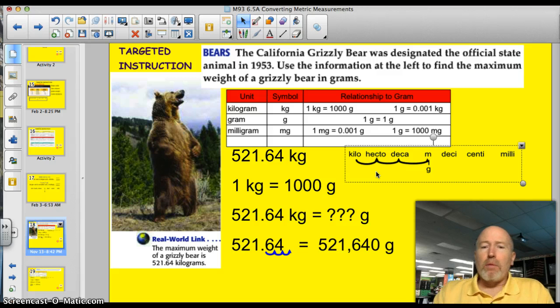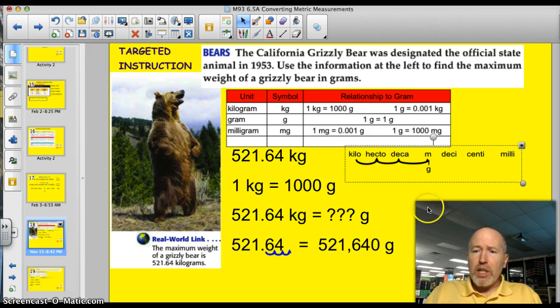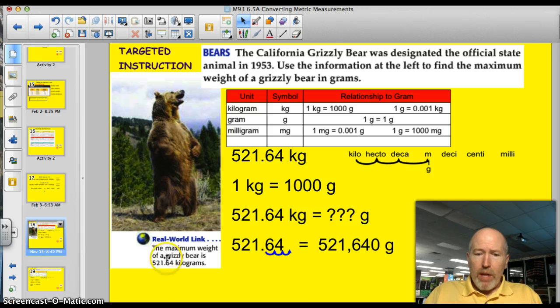Let's take a look at our first problem. The bears, about bears in California. The California grizzly bear was designated the official state animal in 1953. Use the information at the left to find the maximum weight of grizzly bears in grams. Down here it says that the maximum weight of a grizzly bear is 521.64 kilograms. So I put that kilograms.